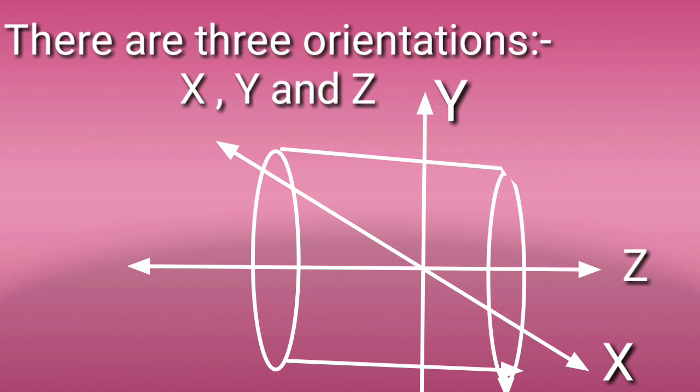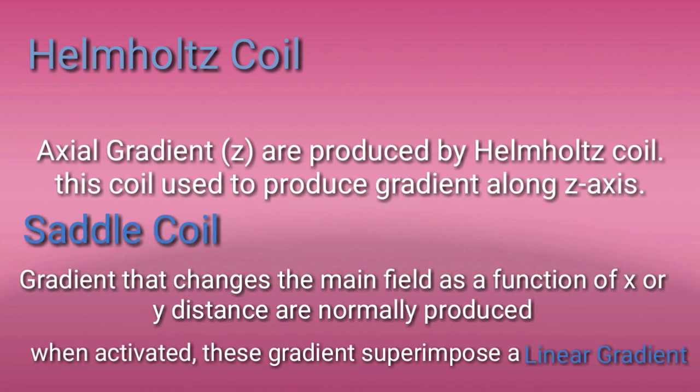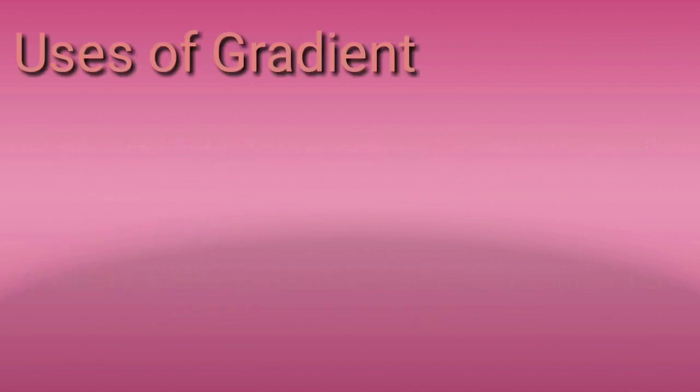The orientation of the gradient is along three directions. This shows the gradient working area. The first one is the Helmholtz coil, used along the Z axis. The saddle coil mainly changes the main magnetic field as a function of X and Y distance. A linear gradient is produced when the gradient is superimposed.